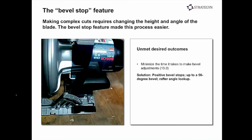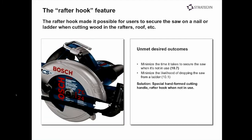Additional innovations included a positive bevel stop feature for those needing angle cuts. Previously you'd have to unscrew the back, make the adjustment, and screw it back in place. Bosch added positive detents that enable quickly finding the correct angle and locking it into position. They also added a raptor hook, addressing two additional unmet needs: minimizing the time it takes to secure the saw when not in use — often up on a ladder — and minimizing the likelihood of dropping it.